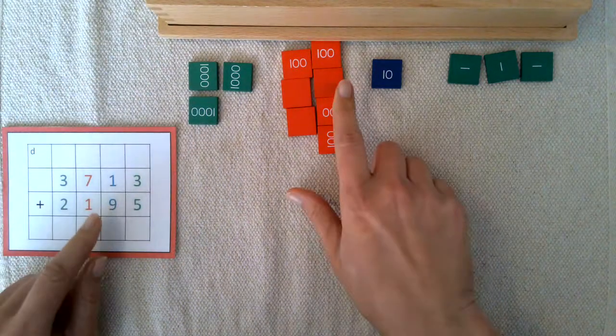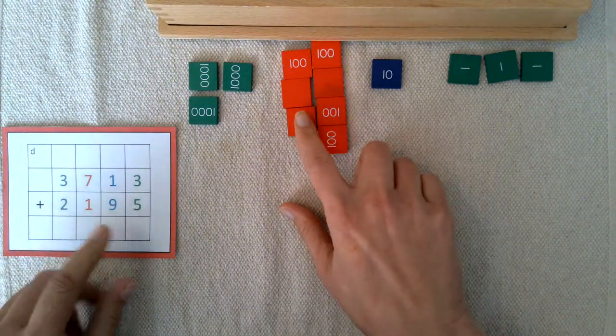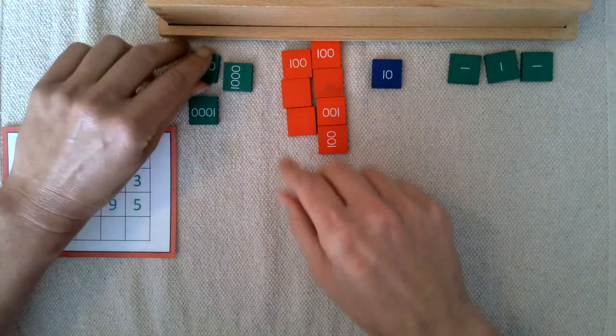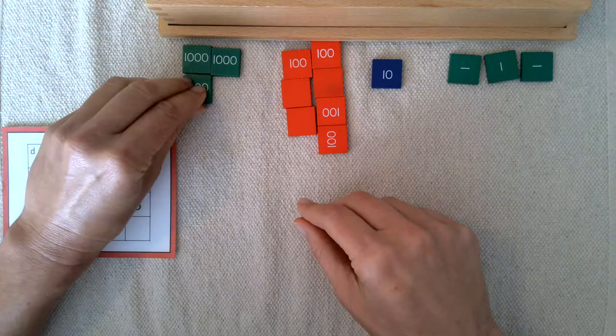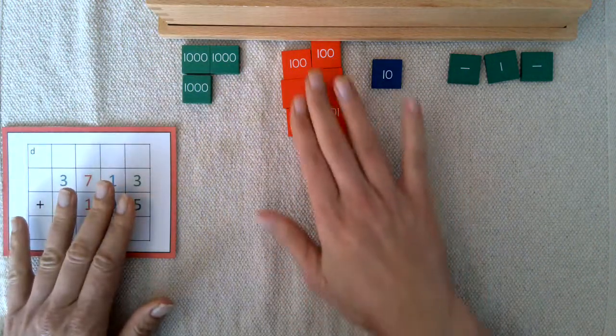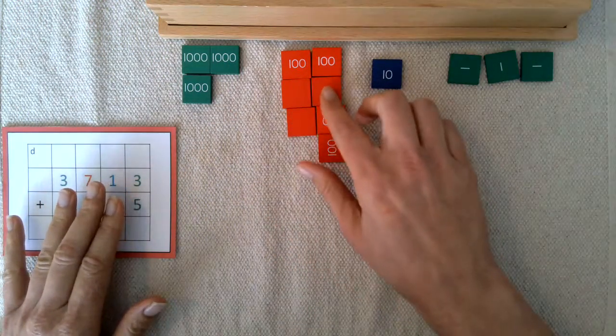Now you'll notice I'm not too concerned with what direction they're facing. Some people like to keep everything very organized, but since they're color coded I don't think that's necessary and it can make things more cumbersome and slow down the process.